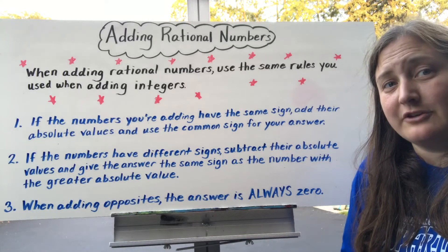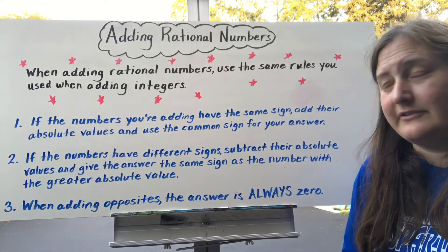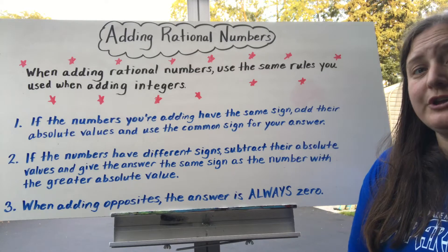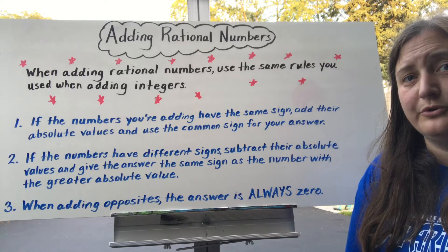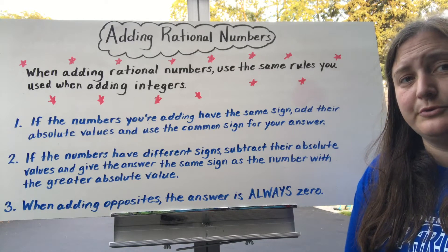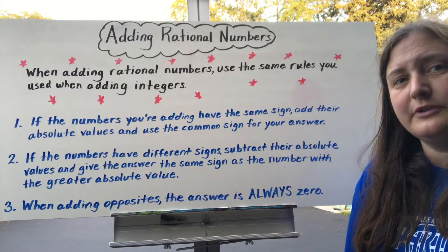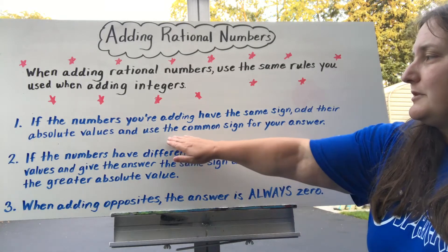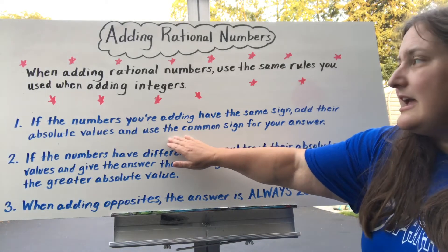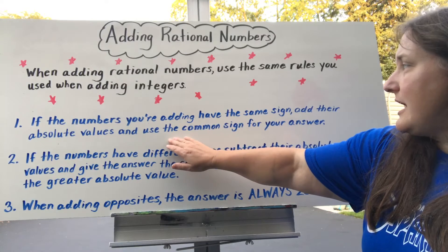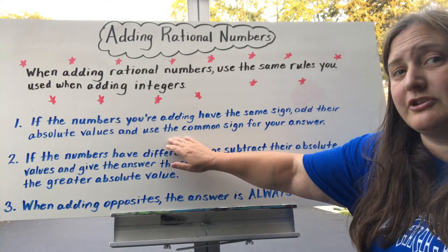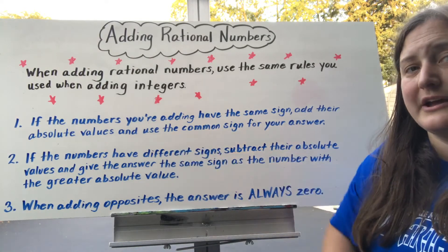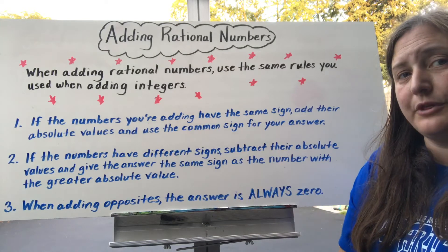Today we're adding rational numbers, and when you are adding rational numbers you're going to use the same addition rules that you used when you were adding integers. So let's review those rules real quick. The first rule is if the numbers you're adding have the same sign, you're just going to add their absolute values and then use that common sign with your answer.